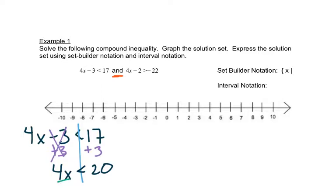That gives us 4x is less than 20. And then we want to divide both sides by 4. Now we're dividing by a positive 4, so the sign doesn't change. That would give us x is less than 5.